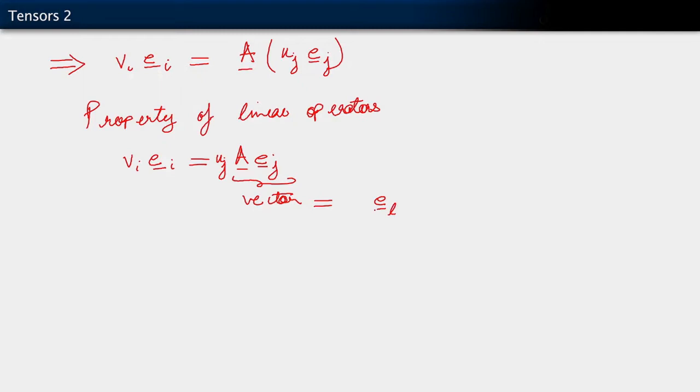I'm going to write its components, the components of this vector. I'm going to write its components as A_L J. The J reminds us of the fact that we are talking of a vector which came about from the action of A on the basis vector E_j. And the L is just a representation of the fact that it is the component corresponding to E_L.